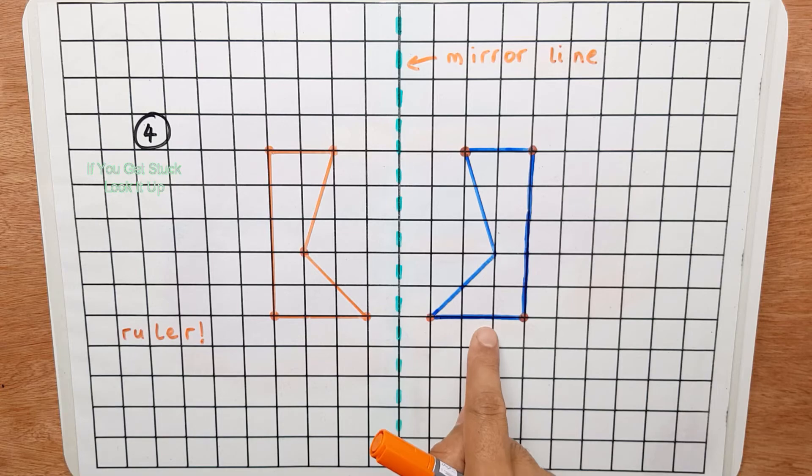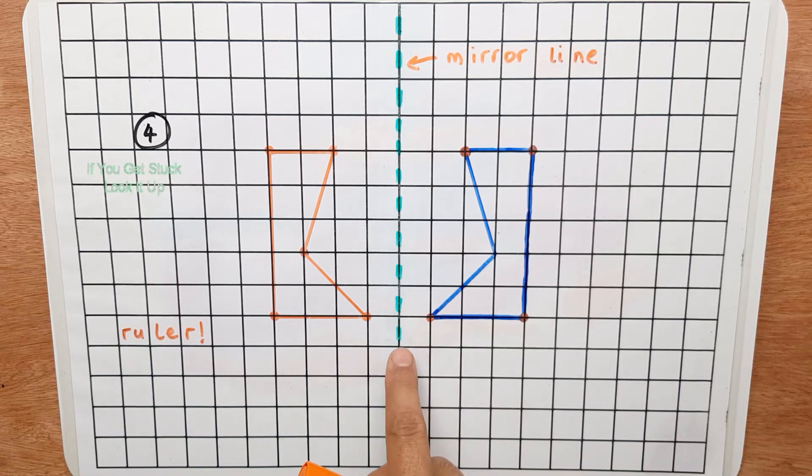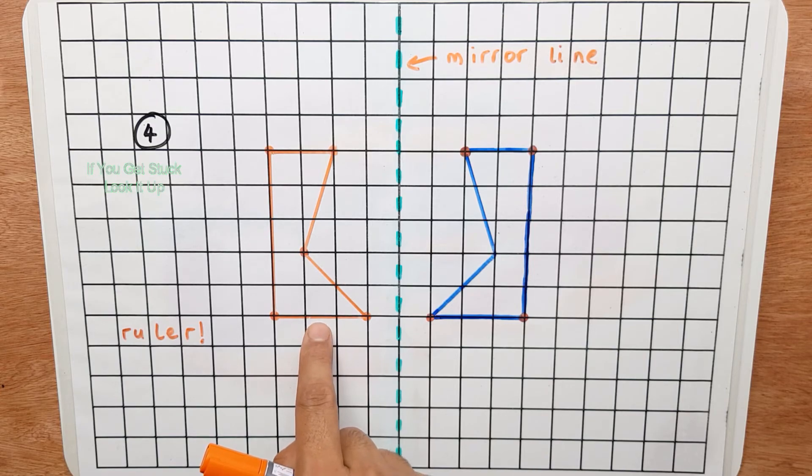So this blue shape reflected in this green mirror line looks like this orange shape.